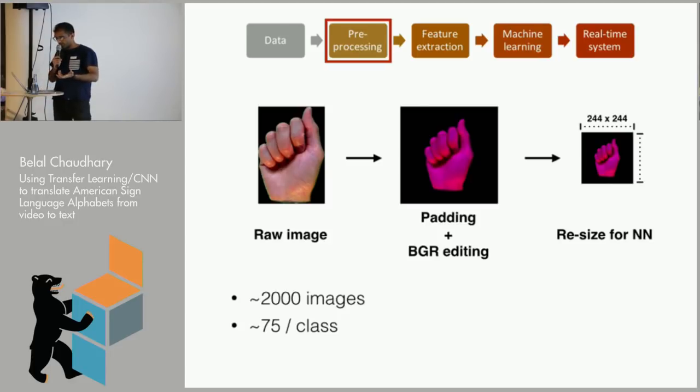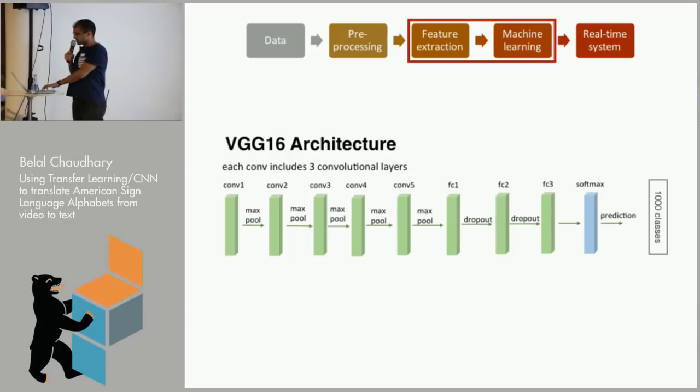This time I have 2,000 images, roughly 75 per class, so still not enough to train anything from scratch. So I went to use transfer learning. And does anyone know what transfer learning is? Okay, cool. So I can use my pictures.